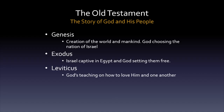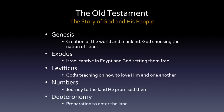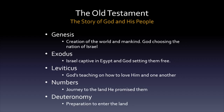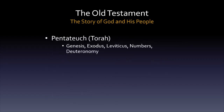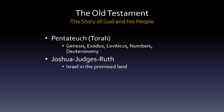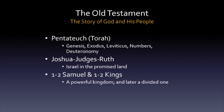In Leviticus, God shows his people how to live in ways that honor him and each other. And in Numbers, they journey to the land he promised them. Deuteronomy is all about preparing to enter that land. Those five books we call the Pentateuch, or in Hebrew, the Torah. Joshua, Judges, and Ruth are the stories of Israel in this new land.